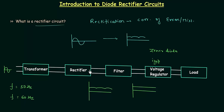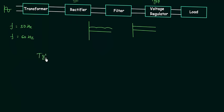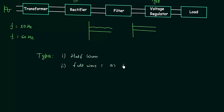In this presentation and in coming presentations we have to deal with rectifier circuits, using semiconductor diodes. We have to deal with three types of rectifier circuits. The first one is the half wave rectifier circuit. The second one is the full wave rectifier circuit, and there are two types: the first is the center tap rectifier circuit, and the second is the bridge type full wave rectifier circuit.